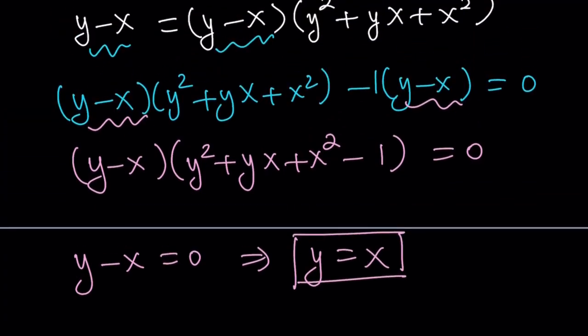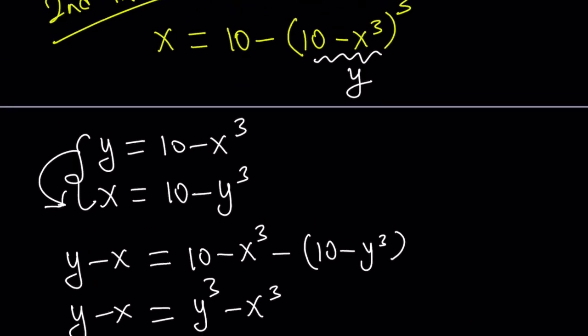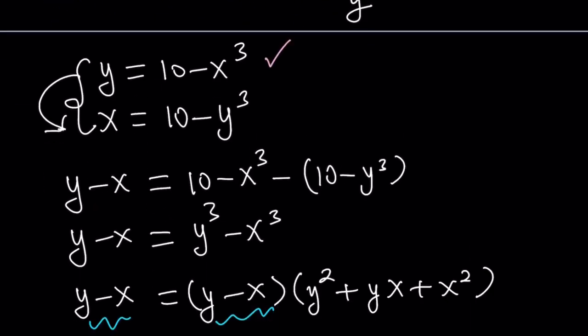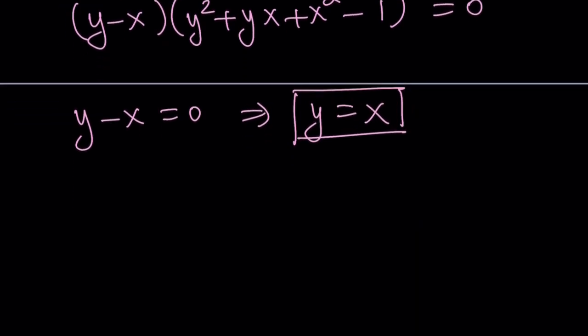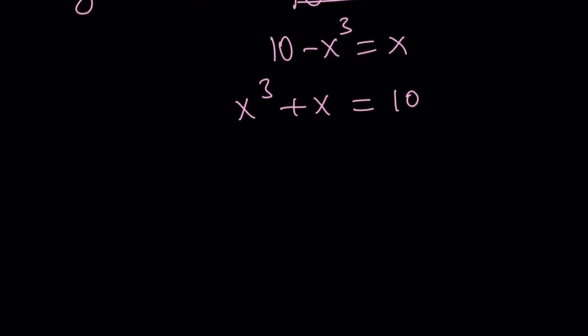But what is y? Let's go back. y is equal to 10 minus x cubed. So let's go ahead and back substitute. This is a cubic equation. Let's put the x terms on the same side and flip. And we get x cubed plus x equals 10. So this is nice, because I can guess x equals 2. When the solution is an integer, it's fairly easy to do. If it's a rational number, you can use rational root theorem, or you can just guess and check sometimes.